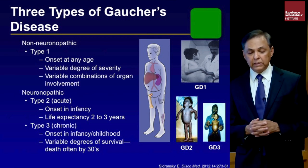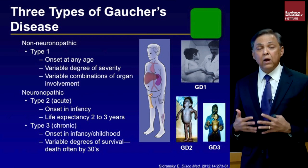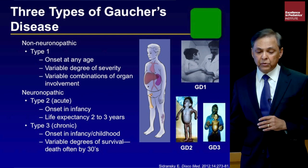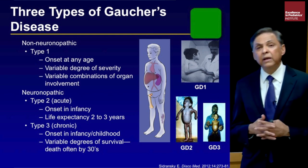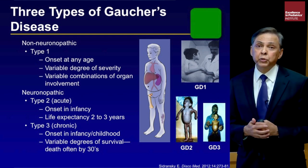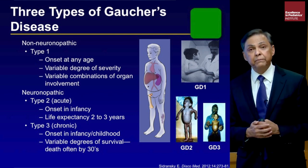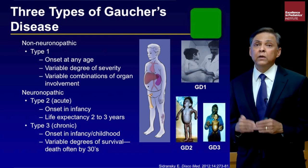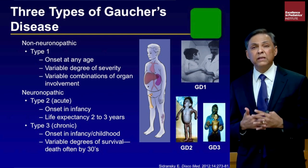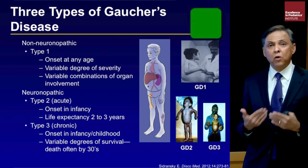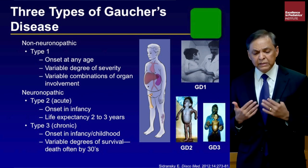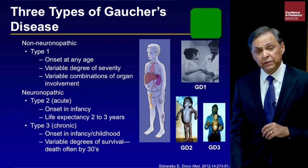There are three types of Gaucher disease. Type 1 is the most common and can present from infancy up to the late 60s, 70s, or even 80s, with highly variable severity and organ involvement. Neuronopathic Gaucher disease is rare. Type 2 is a fulminant, acute variety that is immediately life-threatening, occurring usually in infancy with life expectancy of at best two to three years. Type 3 is a chronic neuronopathic form with onset in infancy or childhood, with variable survival and death often occurring by age 30.